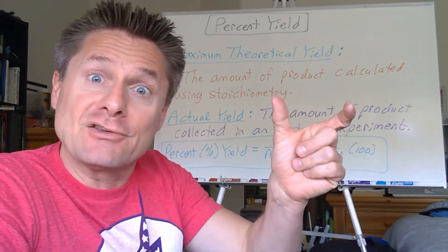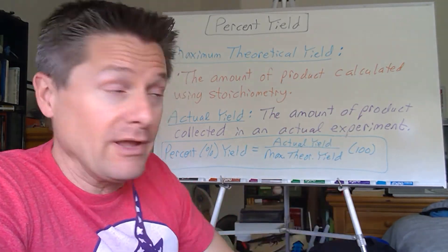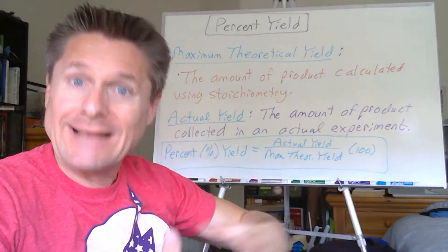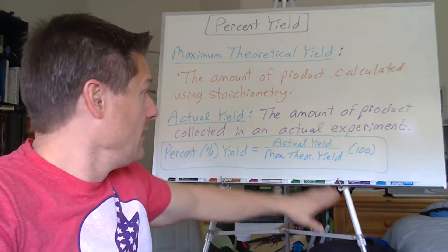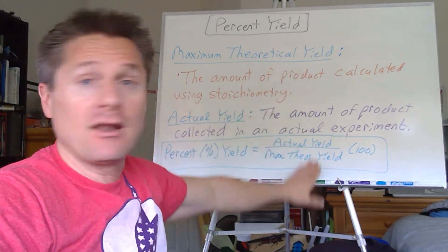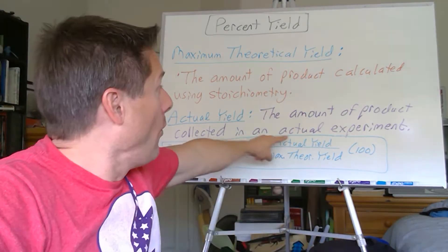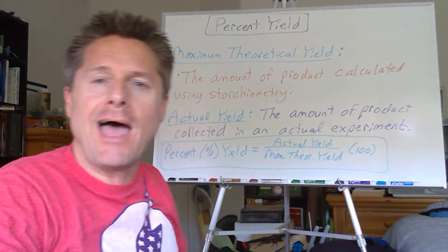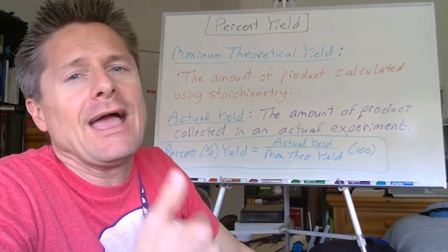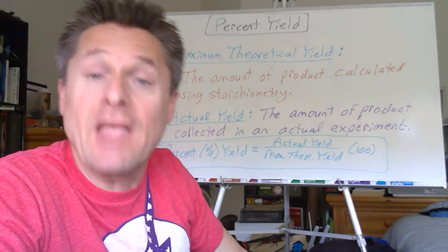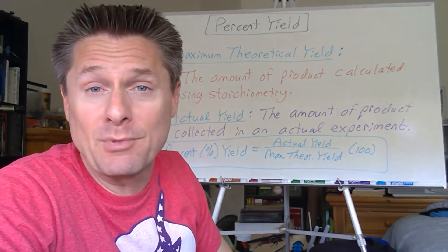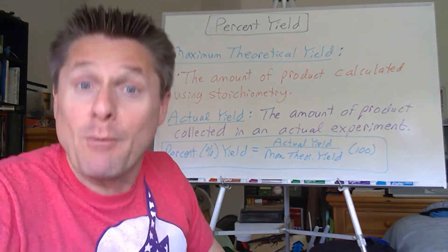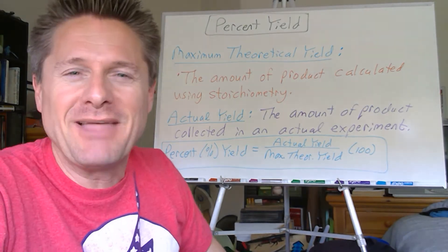You could get 105 percent yield. There could be a side reaction that gives you a heavier product. Percent yield is just that ratio of what you actually got over what you were supposed to get. Percent yield will be the actual yield divided by the maximum theoretical yield, times that by 100 that converts that fraction into a percent. Ideally we get 100 but almost never.